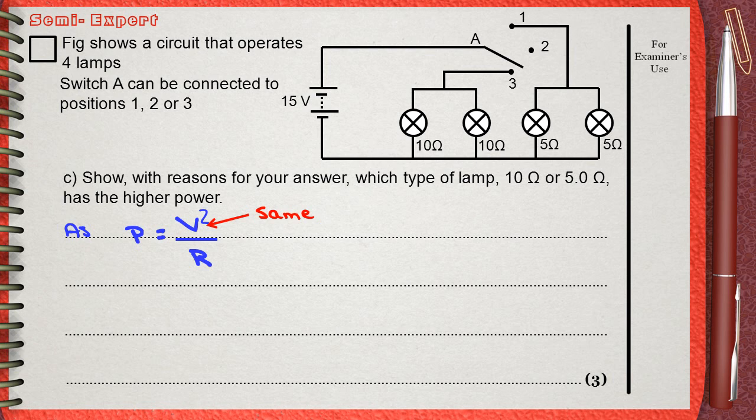...we know that the voltage of both the 5 ohm lamp and the 10 ohm lamp is the same. If you are good in predicting relationships between quantities in one equation, you will know that as resistance decreases, the power will increase. This means the lower the resistance, which is 5 ohm, works with the greater power.